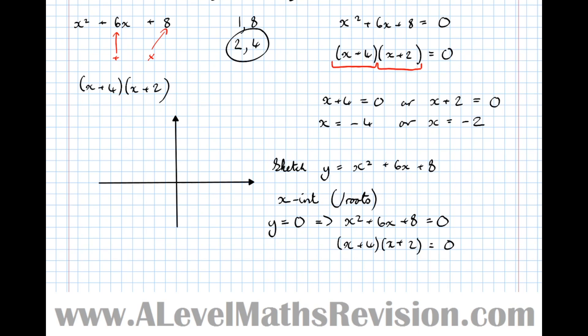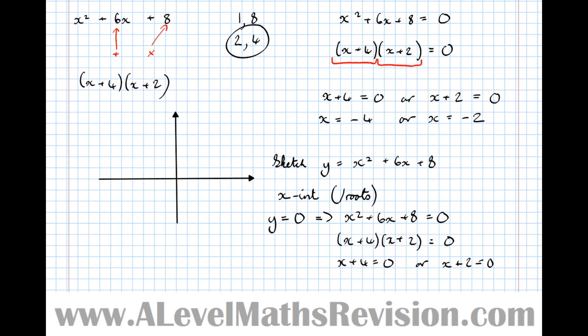The roots occur when y = 0, that's what a root of an equation like this is. So when y = 0 we've got x² + 6x + 8 = 0. We can solve that using the method we did before, factorizing and setting equal to 0. That means x + 4 = 0 or x + 2 = 0, which means x = -4 or x = -2.